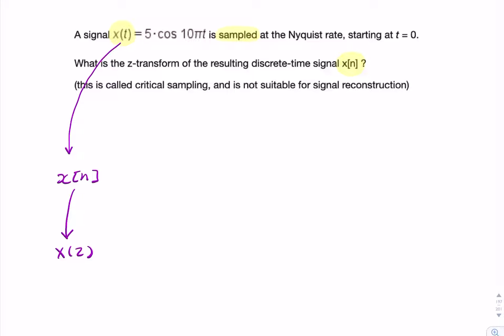So remember, when we sample a signal, we need to replace t with n times uppercase T, where uppercase T is your sampling period.